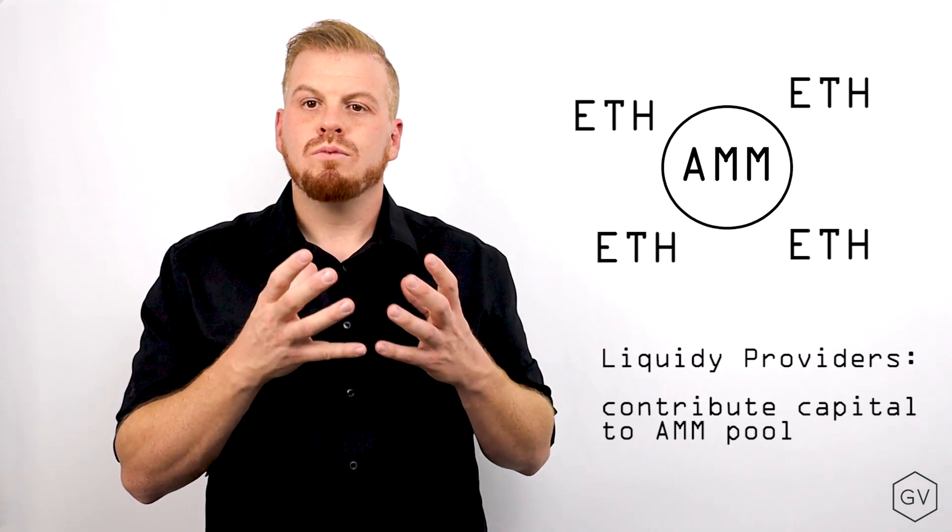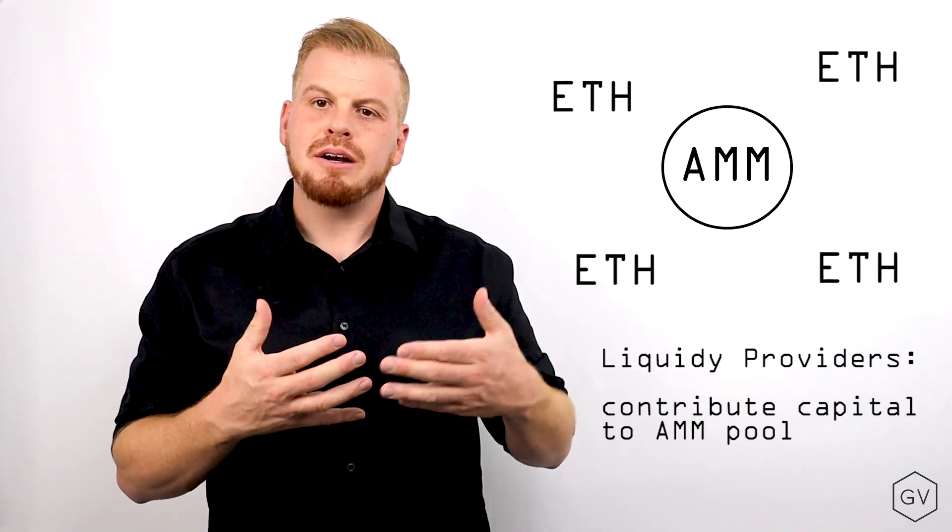A good way to think about the SIREN Automated Market Maker is to think of it as a pool of capital. LPs, or liquidity providers, put up collateral, which stands ready to meet buyer demand or buyer option demand as it shows up.